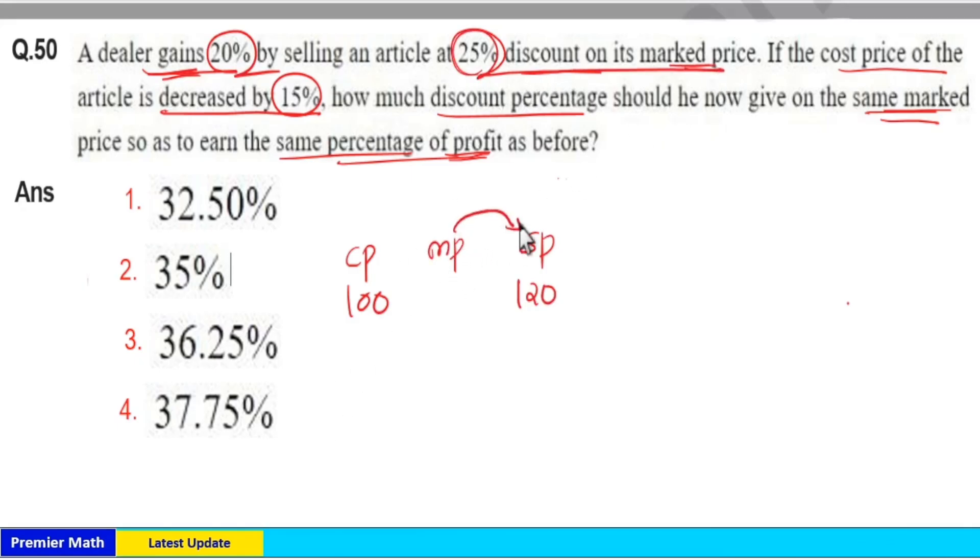Now he is giving 25% discount on mark price. So 25% discount on mark price means if 100% is the mark price, 100 minus 25, 75% is the selling price. And here 75% is given as 120. 75% means 3 by 4, so 3 by 4 equals 120. 3 goes 40 times in 120, so 1 equals 40.